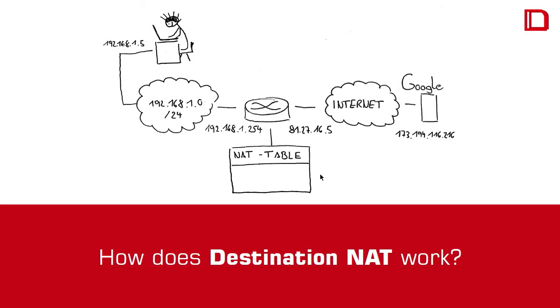The next thing is destination NAT - what's that? That's the other way around. If you want Google to access your notebook, so you do not make an outbound connection but an inbound connection, then you could say: if somebody accesses this official IP address, then I translate the destination to the IP address of my notebook. This is done if you start a service on your notebook, like a gaming server. Then maybe you want destination NAT.